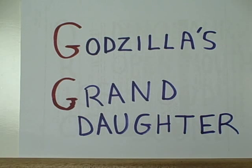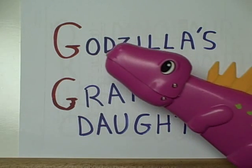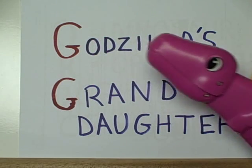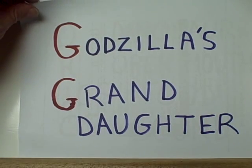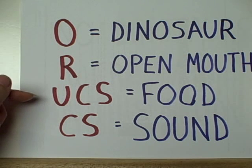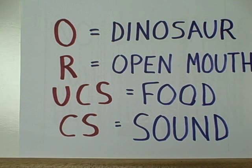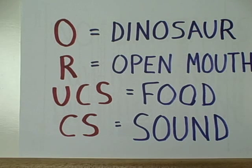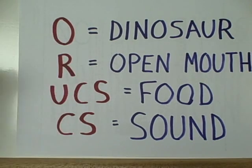We don't have a dog here today, but we do have a dinosaur. This dinosaur is Gigi, and that stands for Godzilla's granddaughter. We're going to do a little bit of classical conditioning with Gigi. The organism is a dinosaur. The response that this dinosaur makes is to open her mouth. The unconditioned stimulus for eliciting that response is food — specifically, the favorite food of dinosaurs like Godzilla: a Japanese policeman. Our conditioned stimulus will be a sound — the sound of Santa Claus making a rattle sound.